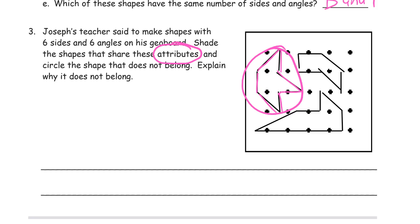And shade the ones that do have six. So let's just count to make sure. One, two, three, four, five, six. I'm going to shade that guy in. And one, two, three, four, five, six. Shade this guy in.